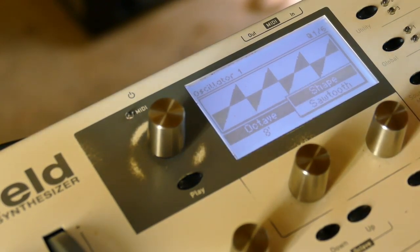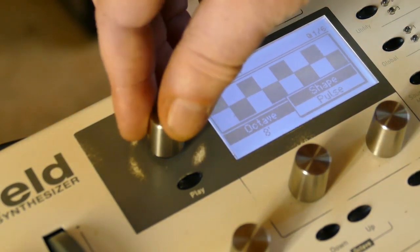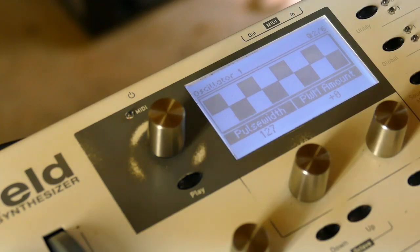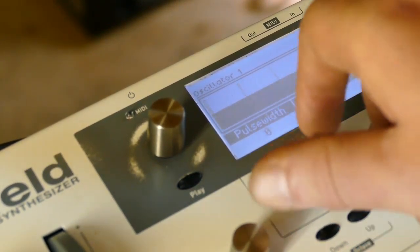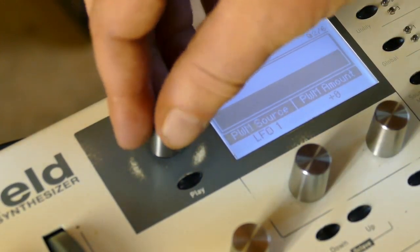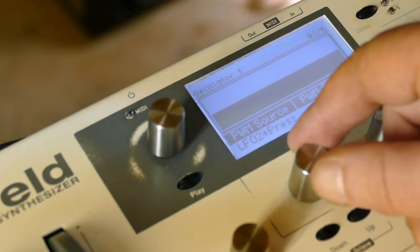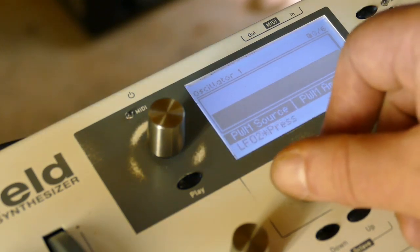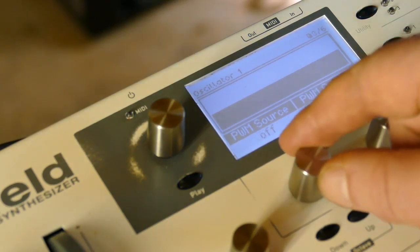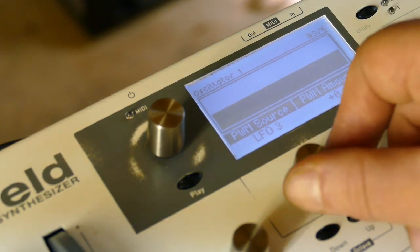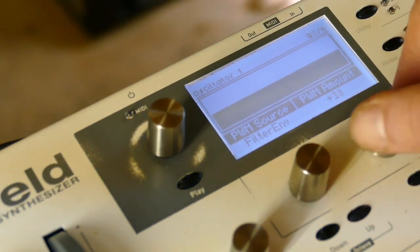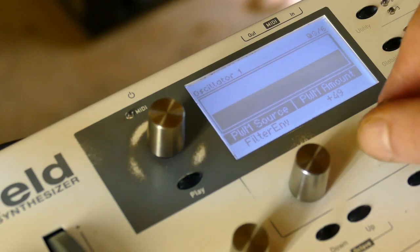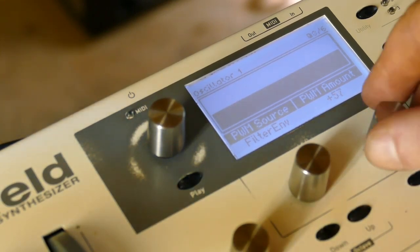Go to oscillator one, change it to pulse, leave it at 8 foot. I'm going to detune it a couple of notches, take the pulse width all the way down to zero, and set this to filter envelope plus 56. Let's see what we get.